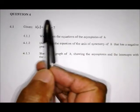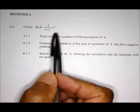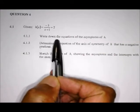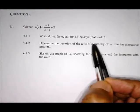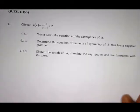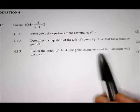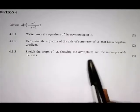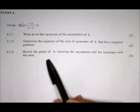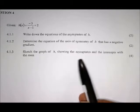Given h(x) = -3/(x-1) + 2, write down the equations of the asymptotes of h, determine the equation of the axis of symmetry of h that has a negative gradient, and sketch the graph of h showing the asymptotes and intercepts with the axes.